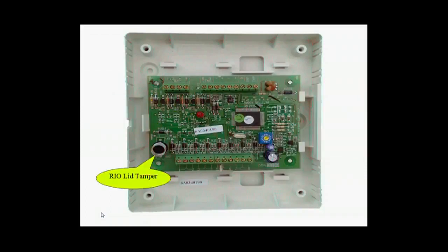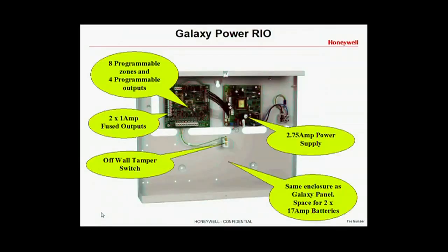To the bottom left hand side we have the RIO lid tamper. On a Para RIO we have a 2.7 amp power supply, 8 programmable zones and 4 programmable outputs, 2 fused 1 amp outputs, a mandatory off-wall tamper switch, and as it is the same enclosure as the Galaxy panel there is space for two 17 amp batteries.